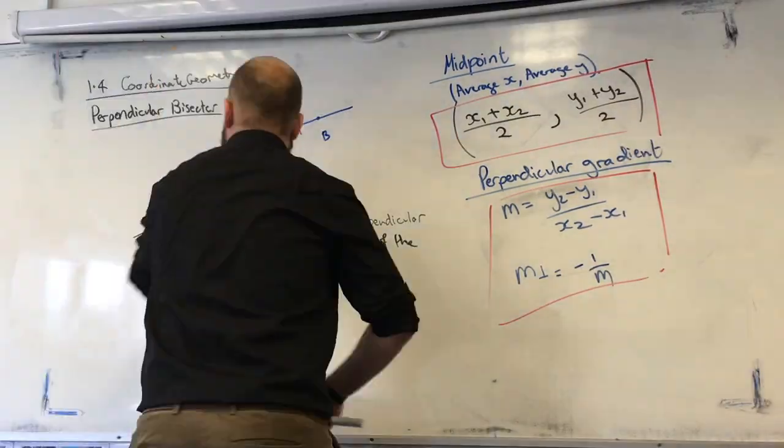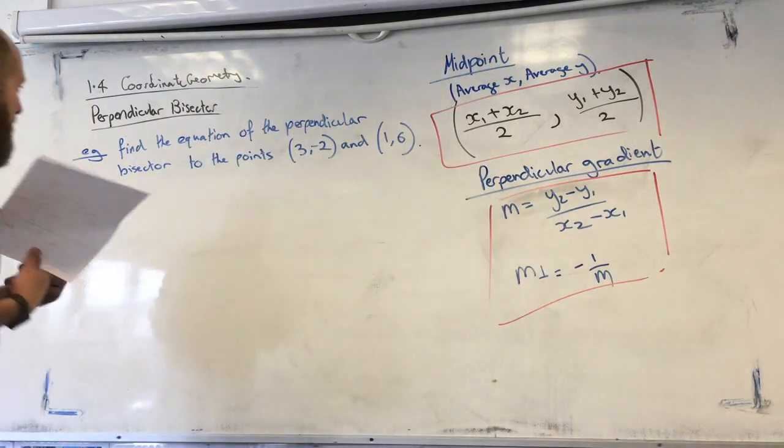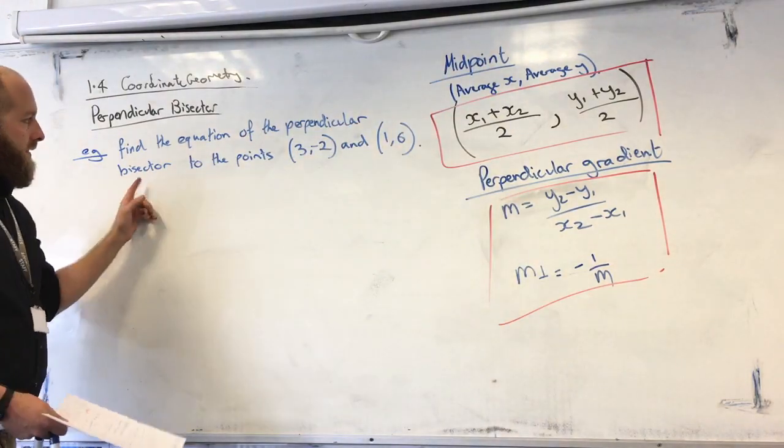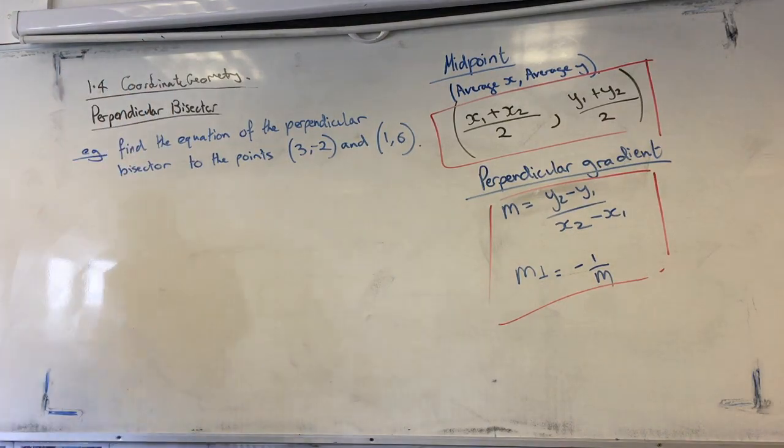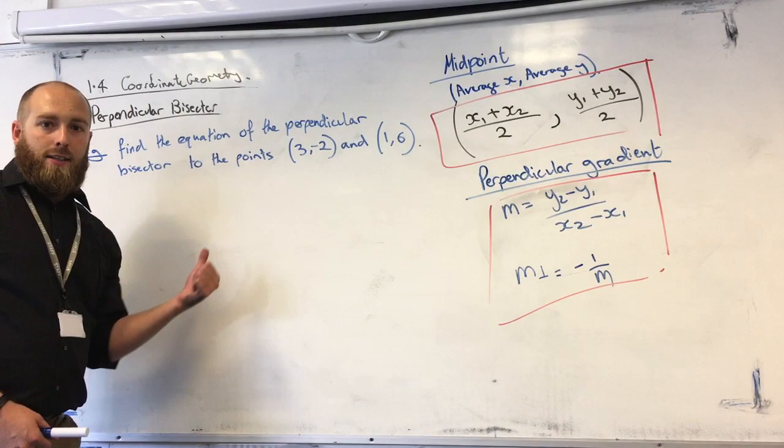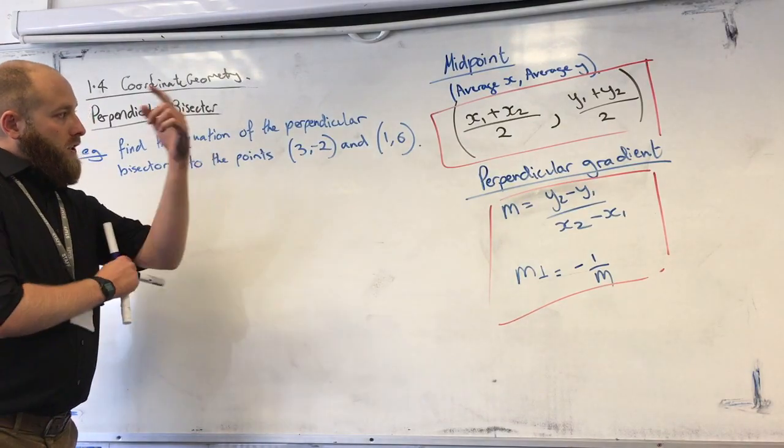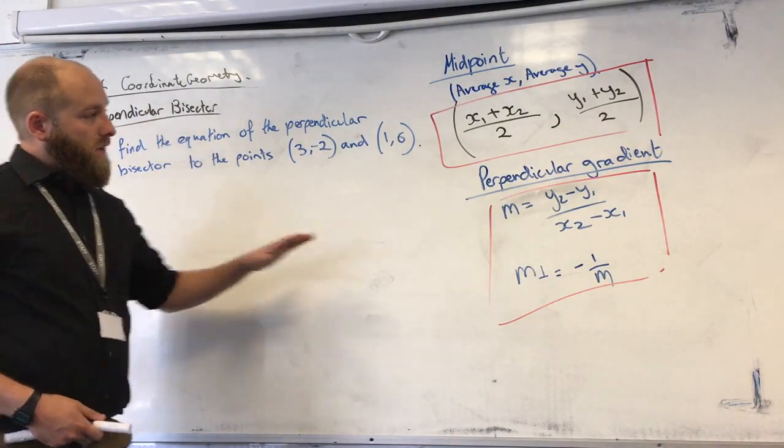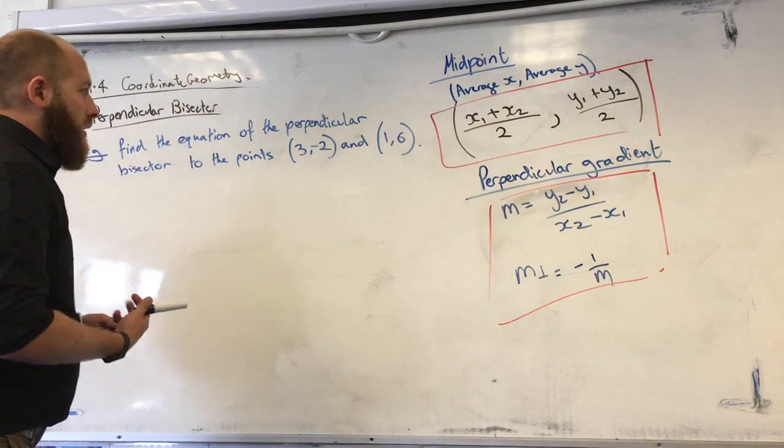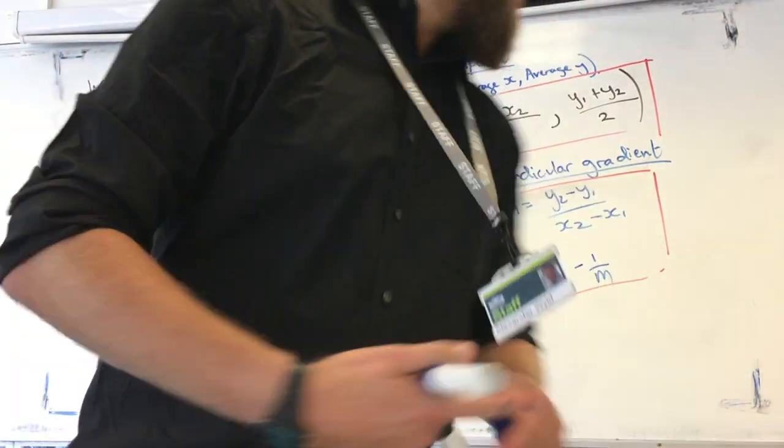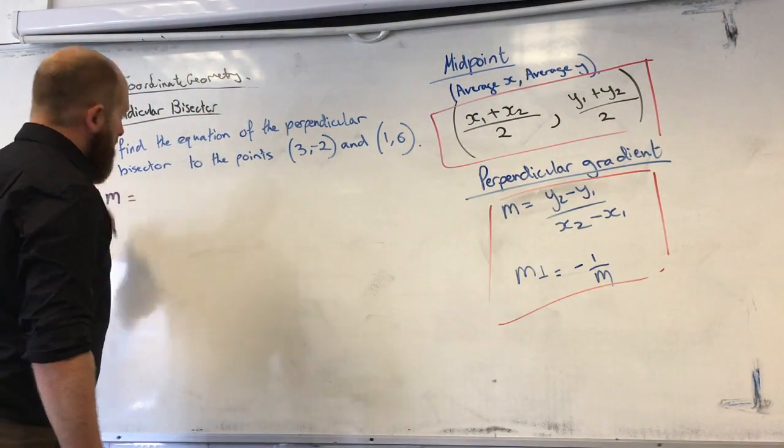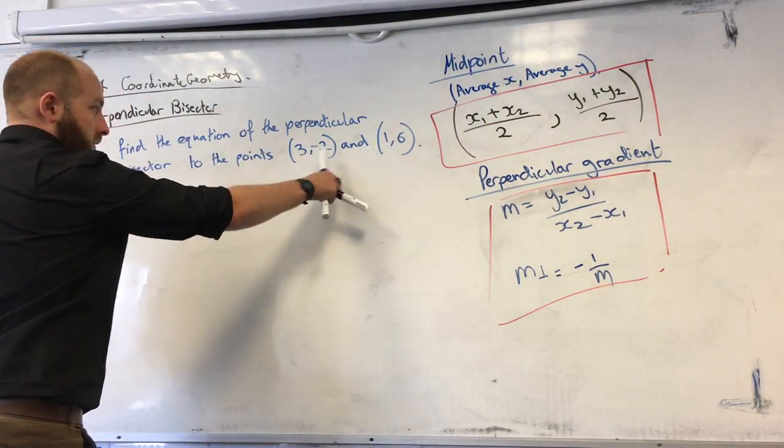Let's go for an example with that. Right, so we've found the equation of the perpendicular bisector to the points (3, -2) and (1, 6). So again, because we're trying to find the equation of the line, we need two things. We need a gradient and we need a point. So first of all, we'll start with the easy one. Let's find the gradient.